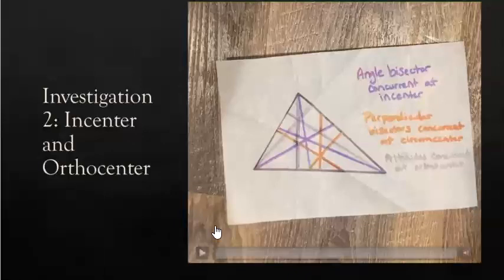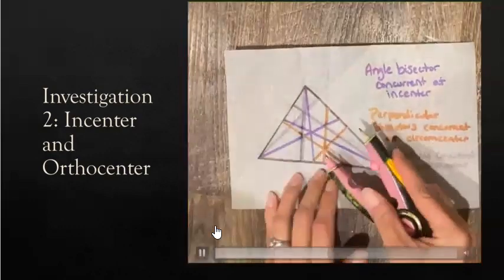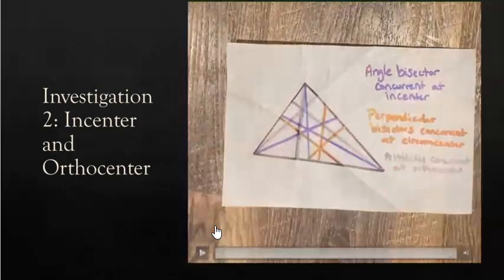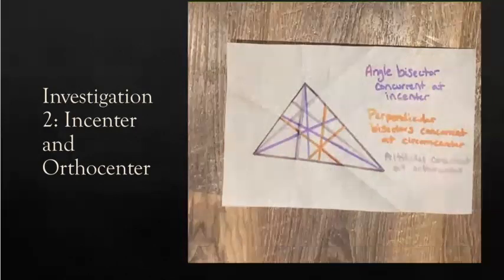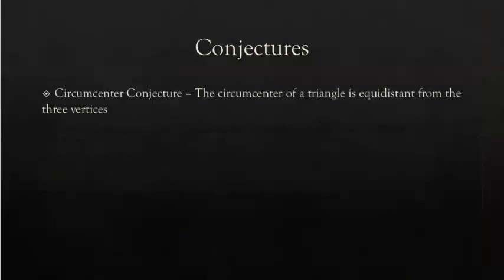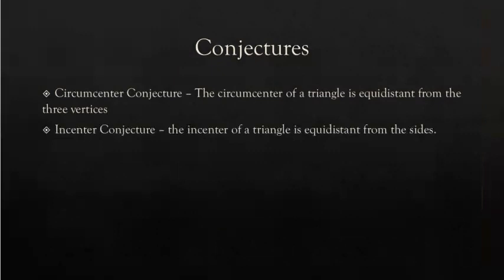Here is my acute triangle. I'm going to look at the circum-center and go to the vertices — I see that the circum-center to the vertices is all the same. Now looking at the circum-center to the sides, that didn't work out. How about the in-center to the sides? That one worked out. What about the in-center to the vertices? And then check the ortho-center — to the vertices or to the sides? So hopefully you have seen that the circum-center of a triangle is equidistant from the three vertices, and the in-center is equidistant from the sides.